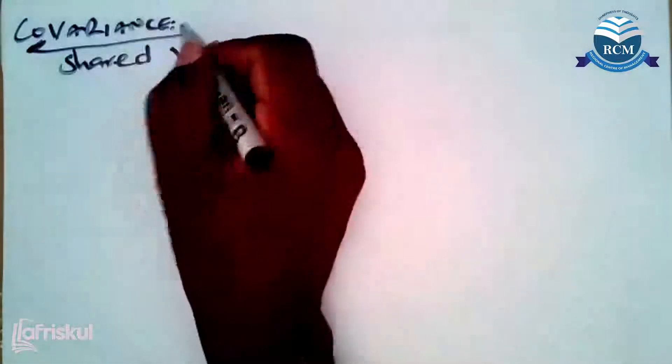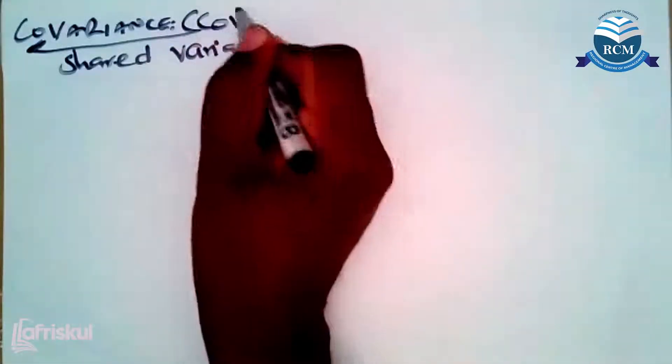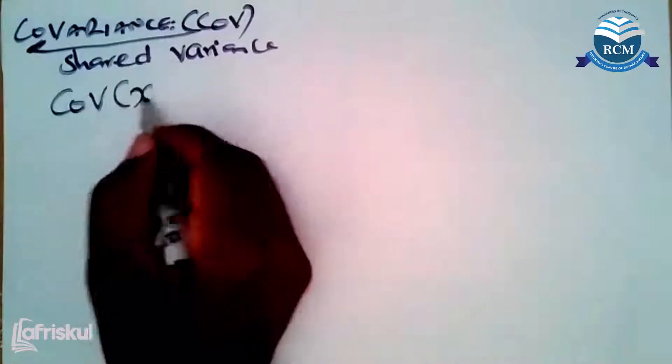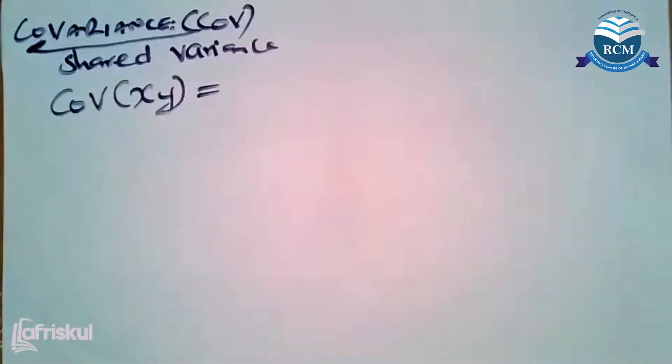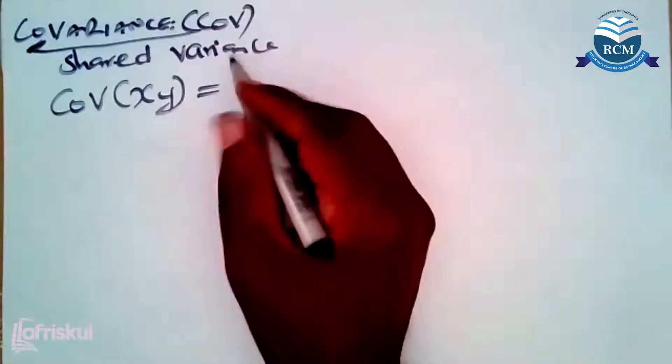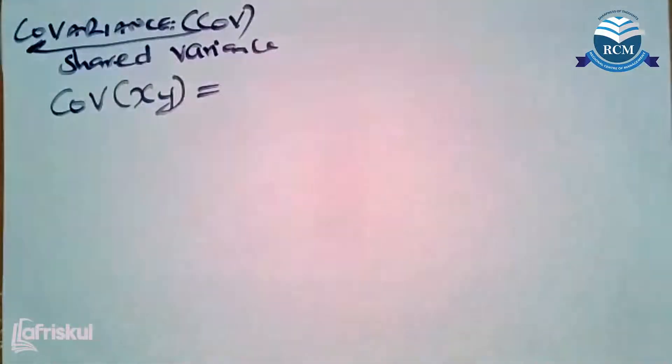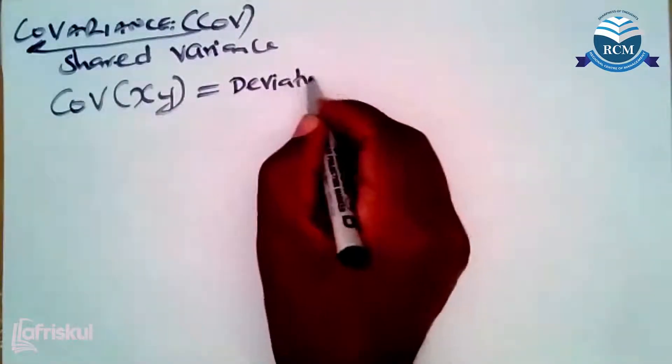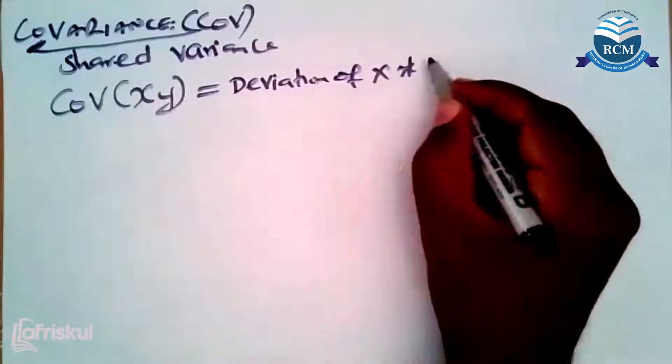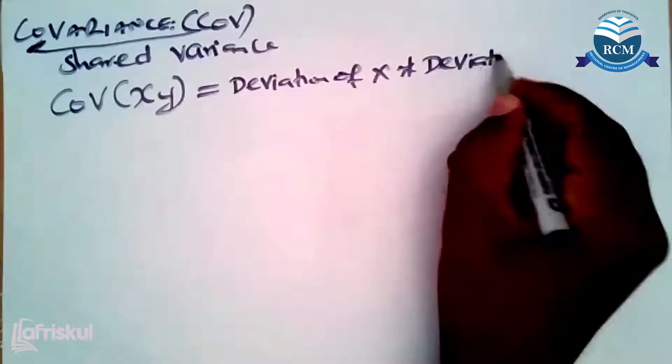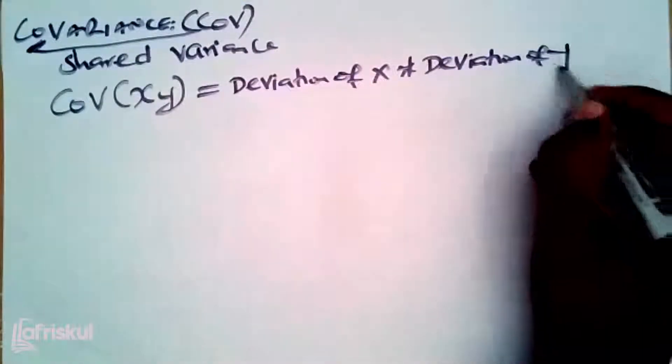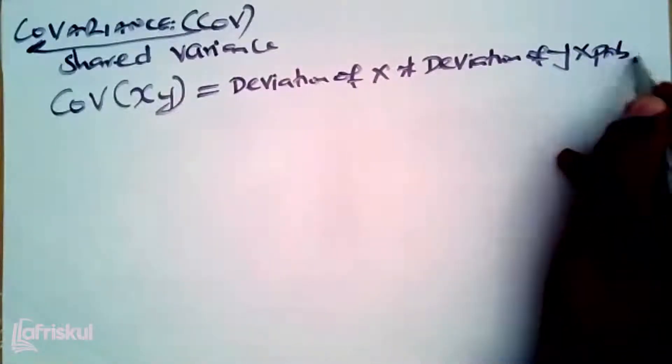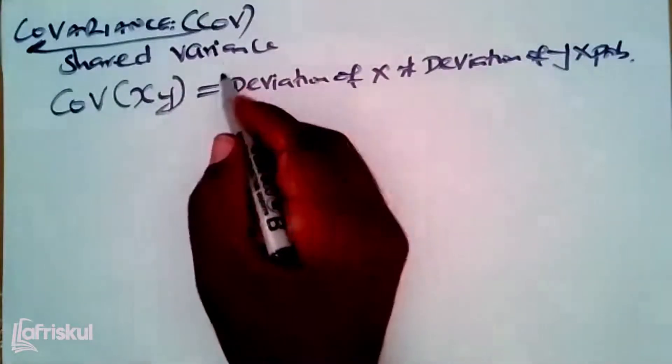So if somebody wants you to get the covariance, we shall be abbreviating it like CoV. If somebody wants you to get the covariance between x and y, how will you get this? You will come and give us the deviation of x, multiply this by deviation of y, times probability, and then you sum.